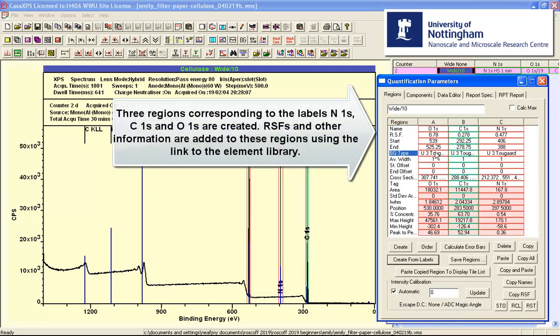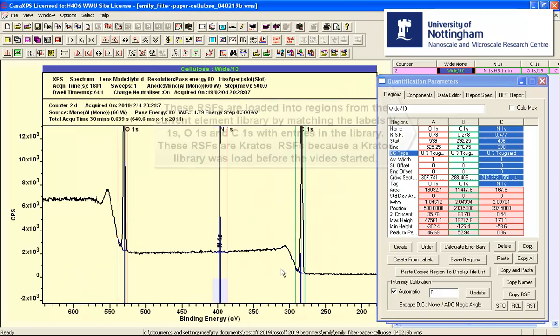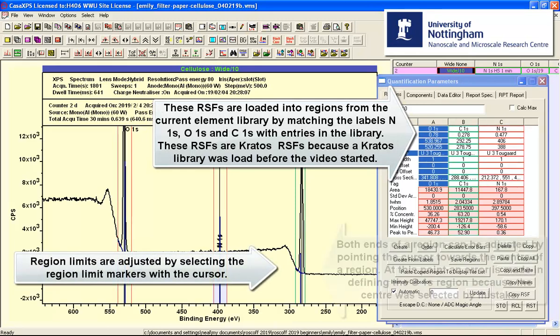So we end up with relative sensitivity factors that are brought in from the element library and a set of regions that correspond to the peaks. So we can just adjust these a little bit, perhaps.